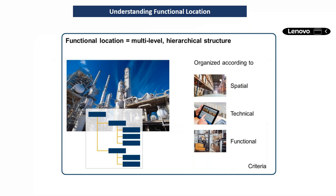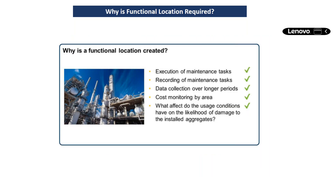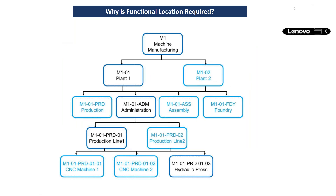Function locations can be created based on a spatial perspective — like a building, as in the township example with Building 1, Building 2, Building 3 — a technical perspective, or a functional perspective based on the process. Function location is needed for: execution of maintenance tasks, recording of maintenance tasks, data collection over a longer period, cost monitoring by area, and understanding what effect usage conditions have on the likelihood of damage and installed aggregates.